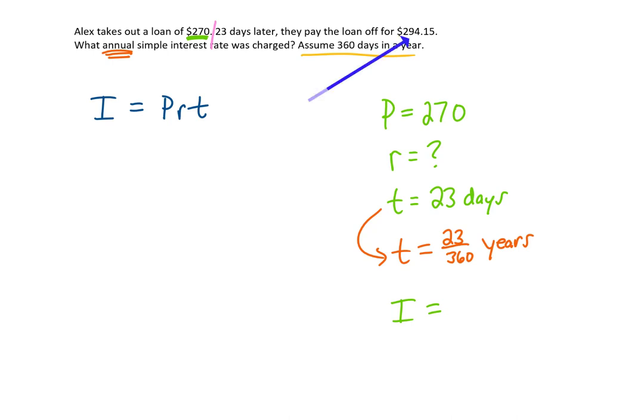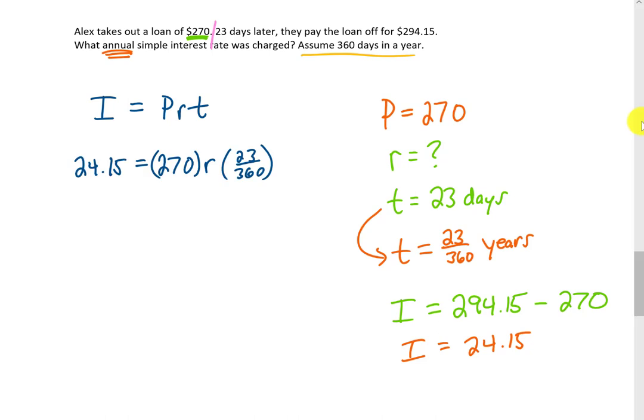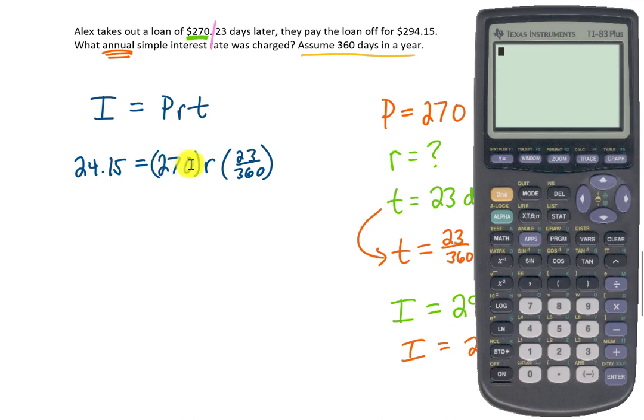You'll notice that Alex paid the loan off for $294.15. The original amount of the loan was $270. So the amount of interest that was paid on this loan is that final payment that paid off the loan minus the original principal of the loan. In other words, the interest that Alex paid on this loan was $24.15. We're going to take those three orange values and plug those into our formula. That gives us this equation, which we can solve for r. The first thing I'm going to do is multiply 270 by this 23 over 360, which gives me 17.25 on the right-hand side. That is still multiplied by r. On the left side, we have $24.15 still.